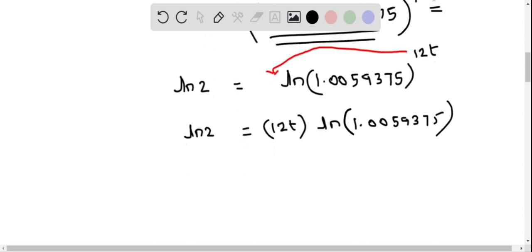Now we solve for t by dividing both sides by ln(1.0059375). This gives 12t = ln(2) / ln(1.0059375).